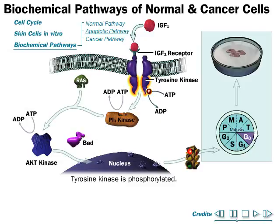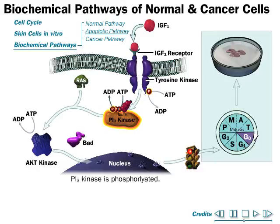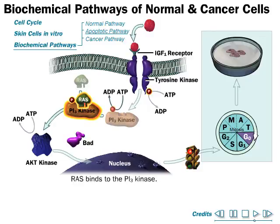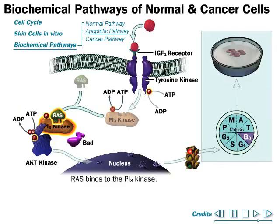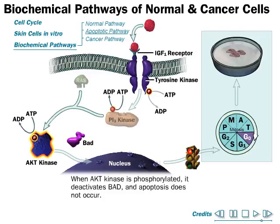After phosphorylation of tyrosine kinase, it phosphorylates PI3 kinase. The phosphorylated PI3 kinase then attaches with Ras protein. This PI3 kinase–Ras complex activates and phosphorylates AKT kinase. The phosphorylated AKT kinase then deactivates the Bad protein, so apoptosis does not occur. When we have lots of IGF, apoptosis is suppressed.